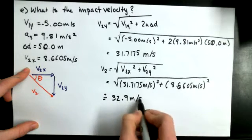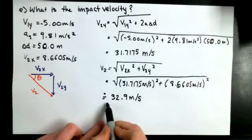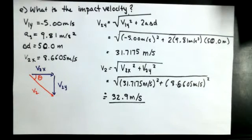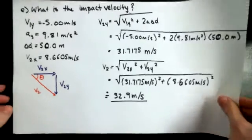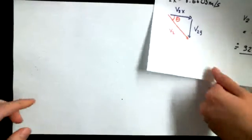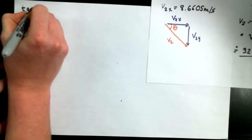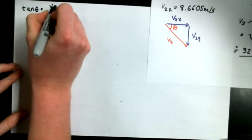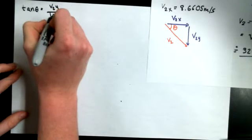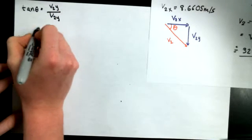Now along with this, we want to find the angle that it impacts at. So we're going to use SOHCAHTOA, and we have that the angle will equal tan inverse multiplied by V2Y over V2X.